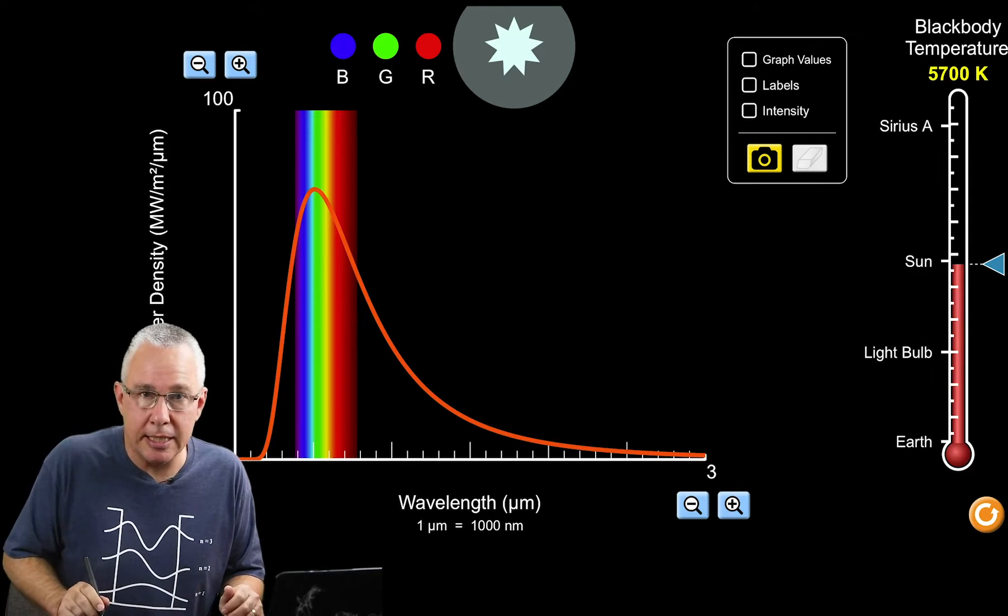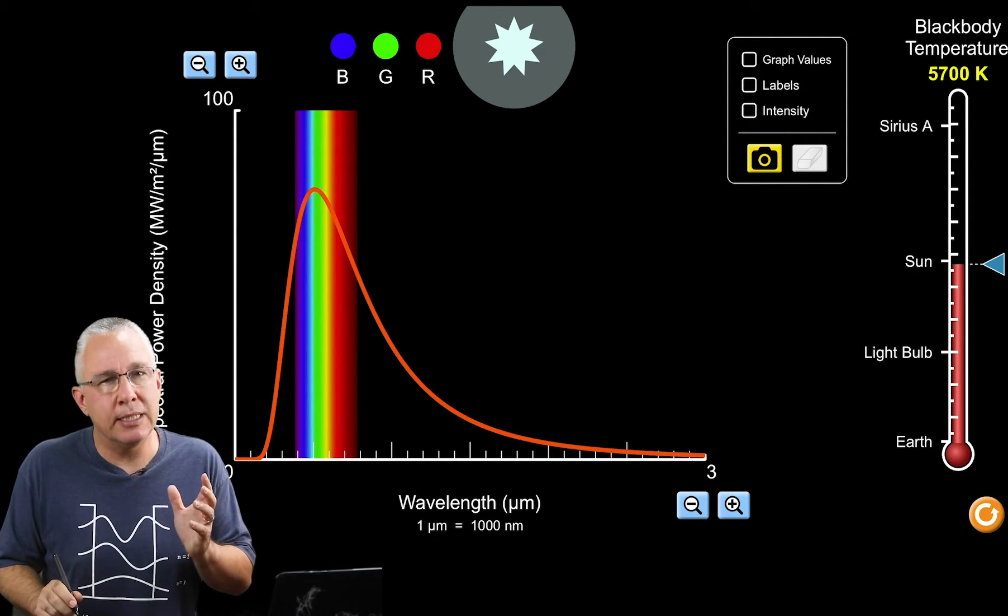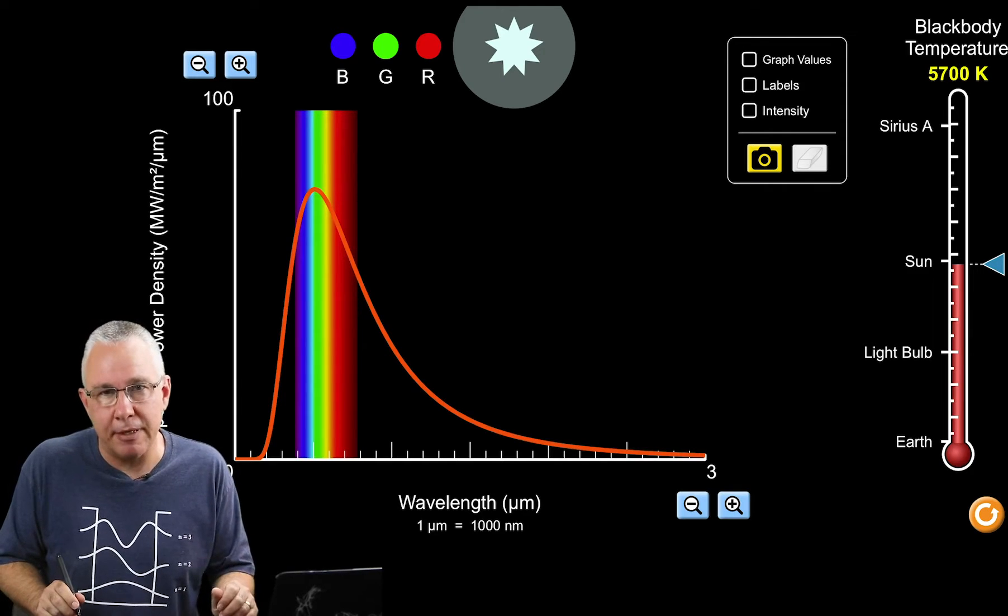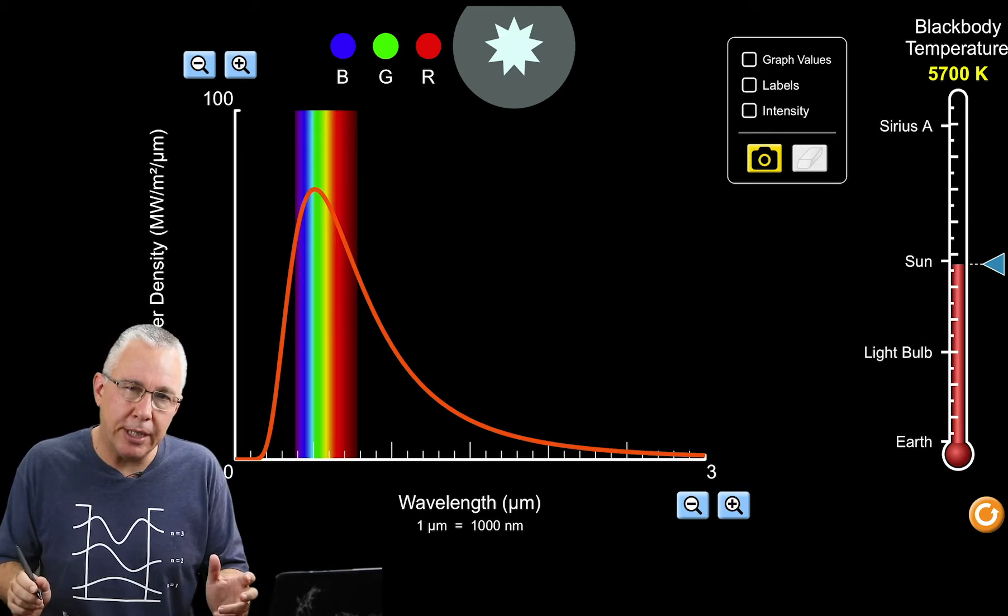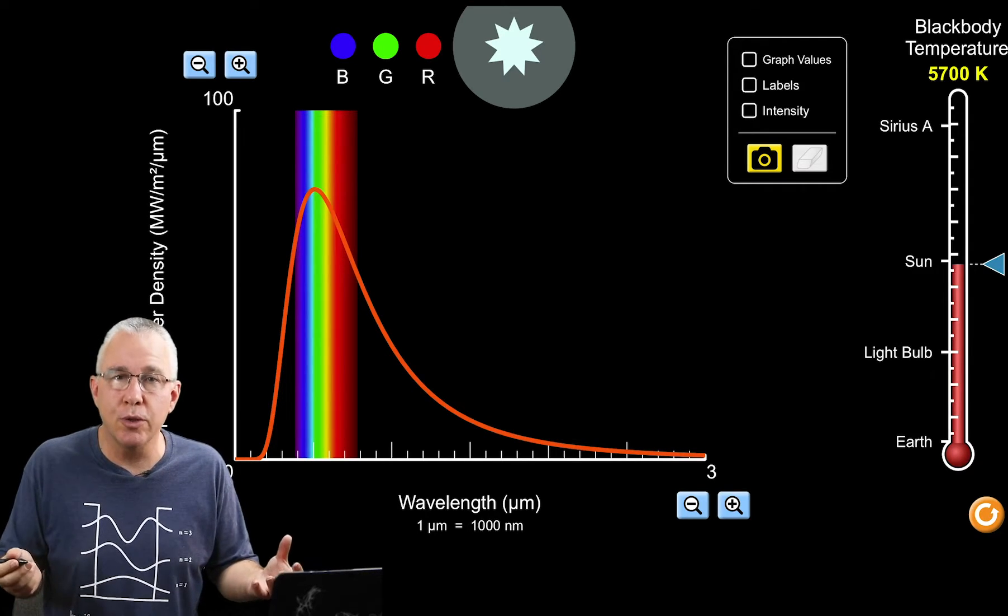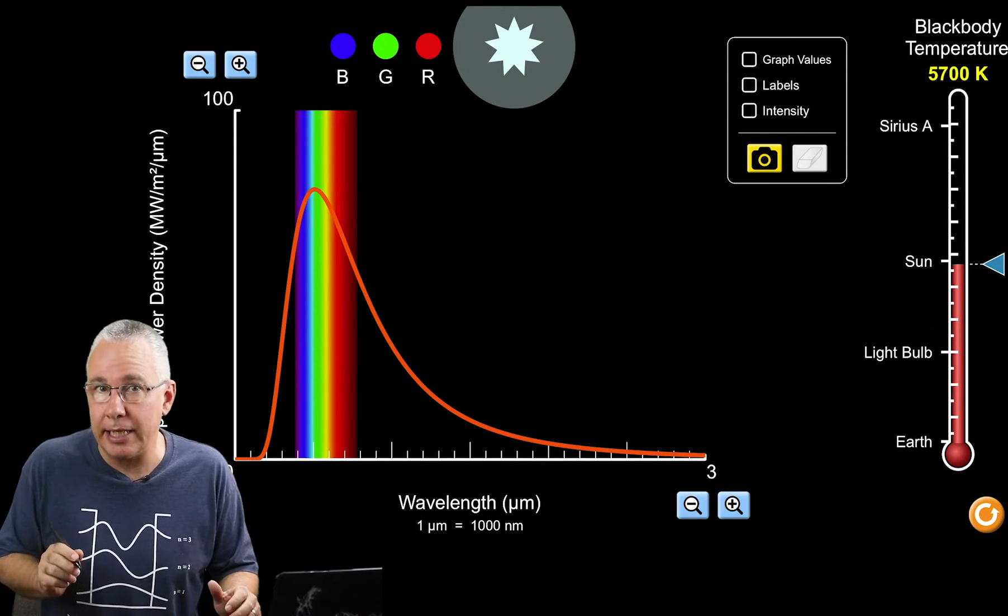What you can see here is a representation of a black body curve. Before we study the actual graph, we need to quickly review what a black body is. A black body is simply an object that absorbs all the radiation that falls on it and re-emits it in the form of electromagnetic radiation.